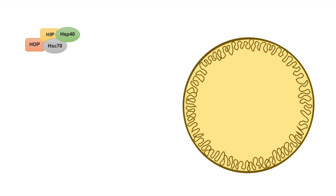There is also another protein known as HOP — the HSC70-HSP90 organizer protein — which links HSC70 with HSP90. And there is another protein involved in this complex known as BCL2-associated athanogene 1, or BAG1.